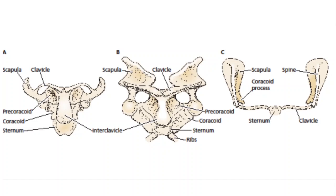In monotremes you see this very reptilian kind of pectoral girdle, designed to support the animal in a sprawling posture. It keeps the animal up, but it's big, bulky, and heavy — expensive to produce and it limits locomotion. It is obviously improved upon in marsupials and eutherian mammals. That's why echidnas and platypuses have this sprawling gait.